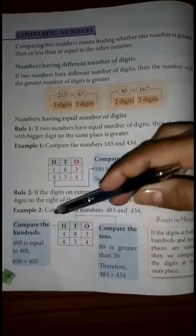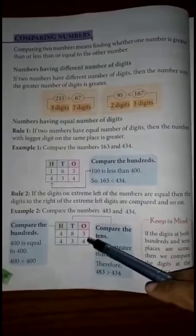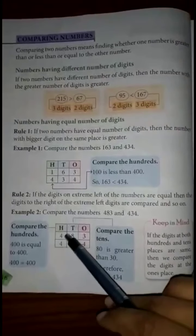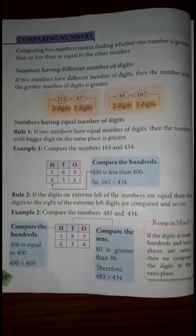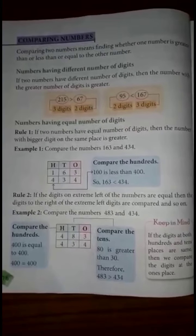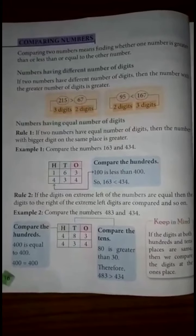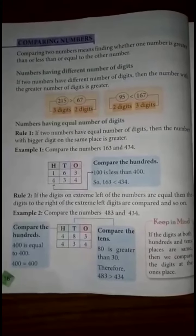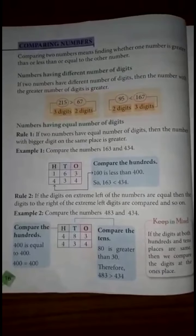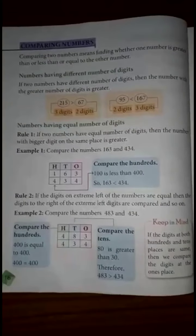We set up a column with 1s, 10s, and 100s places. For 483 and 434, we first compare the hundreds place. In 483, the hundreds digit is 4, and in 434, the hundreds digit is also 4. Since 400 equals 400, the hundreds place is equal, so we cannot decide yet.